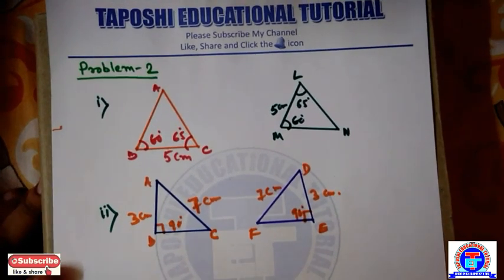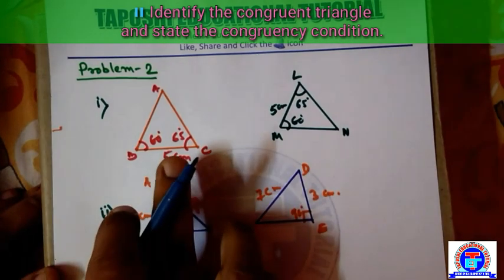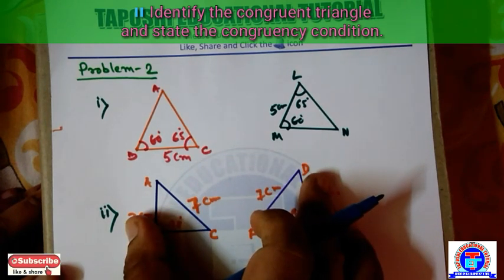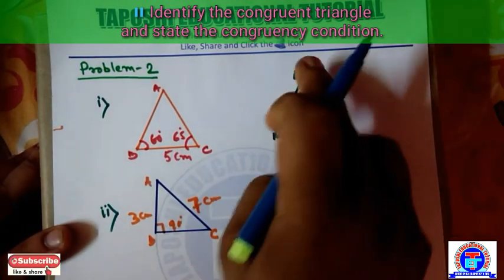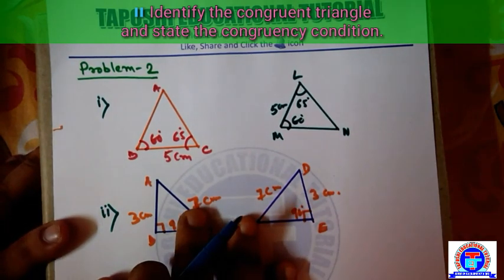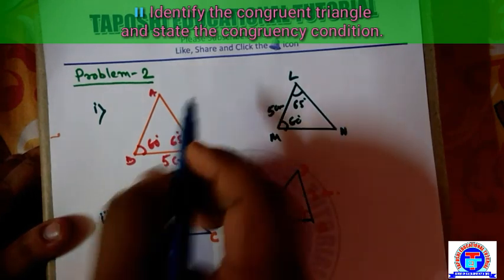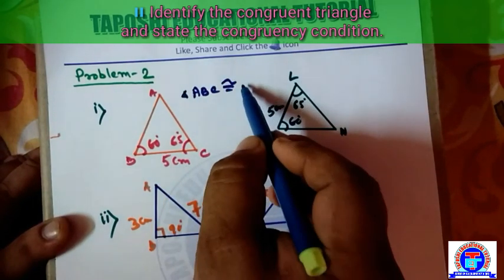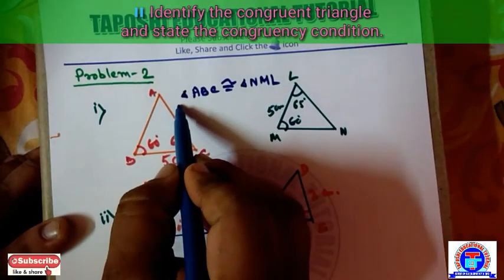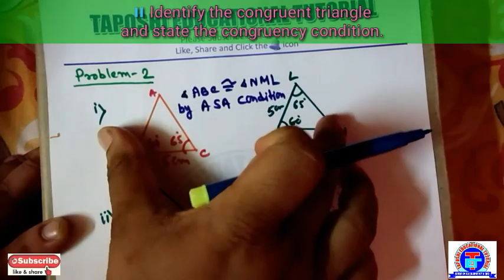Now, my dear students, I bring another problem, problem number 2, for better understanding of congruency of triangles. Problem number 2: identify the congruent triangles and state the congruency condition. First one: two triangles ABC and LMN. These follow the Angle-Side-Angle congruency condition. So triangle ABC is congruent to triangle NML by the Angle-Side-Angle condition.